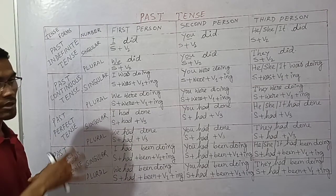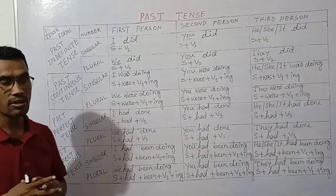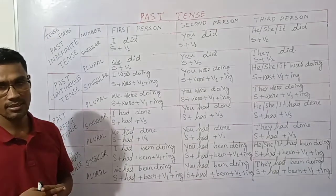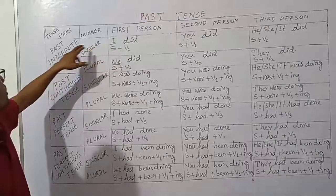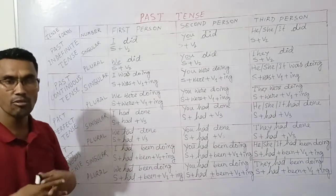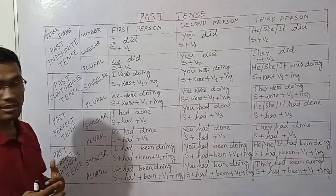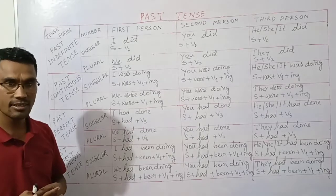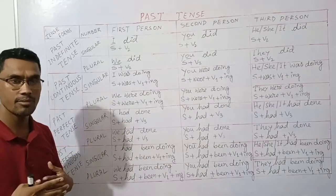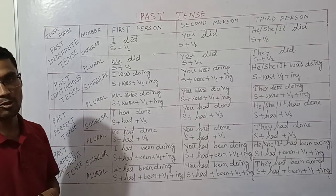For past indefinite tense, the sentence structure is: subject plus verb second form plus object. The auxiliary verb used in past tense is 'did,' which is the second form of 'do.' Subject plus 'did' on a deep level — 'did' is the second form for past tense.